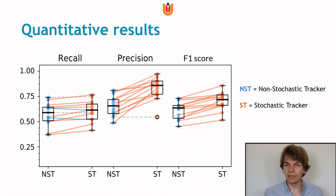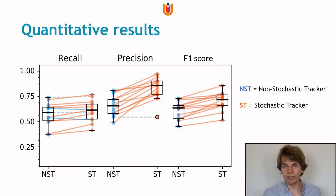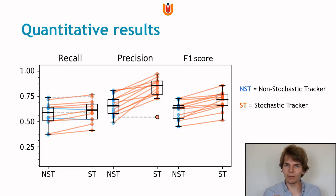We compare these metrics between the non-stochastic tracker in blue and the proposed stochastic tracking algorithm in orange. These results were obtained using leave-one-out cross-validation, and in this graph results of the sections are aggregated at an image level. Results from the same image are connected by a colored line indicating which algorithm performed better: blue lines mean the non-stochastic tracker performed better, orange lines mean the stochastic tracker performed better, and grey lines indicate the results were equal on the second decimal.